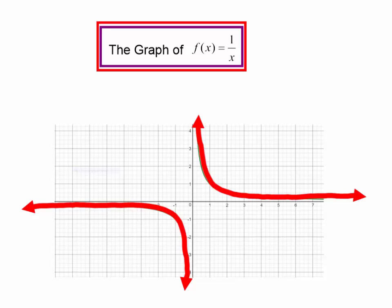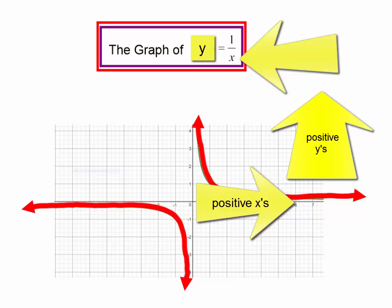We've already talked about this a little bit. f of x is just y — this is the graph of y equals 1 over x. In order to graph this, plug in any value you want for x. If you plug in a positive value for x, then y is going to equal 1 over a positive number, so all of your y's will be positive, which is why when the x's are positive, the y's are also positive.